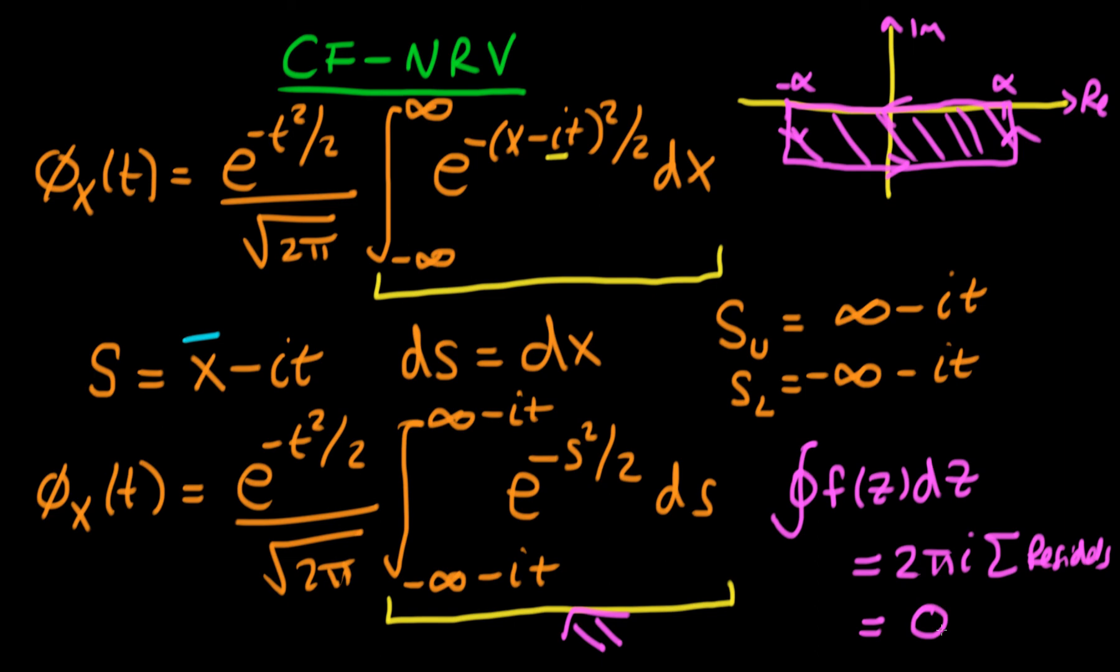So we can actually find that the contour integral of that particular function around those contours must be equal to zero if it is a closed contour integral. That means it's starting and ending at the same place, and we're going to use that fact in order to evaluate this integral here.